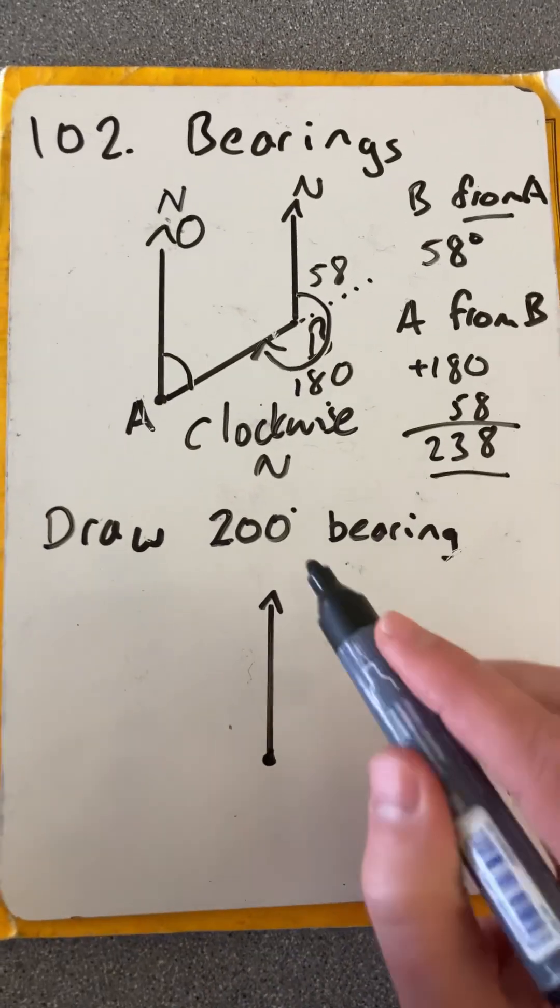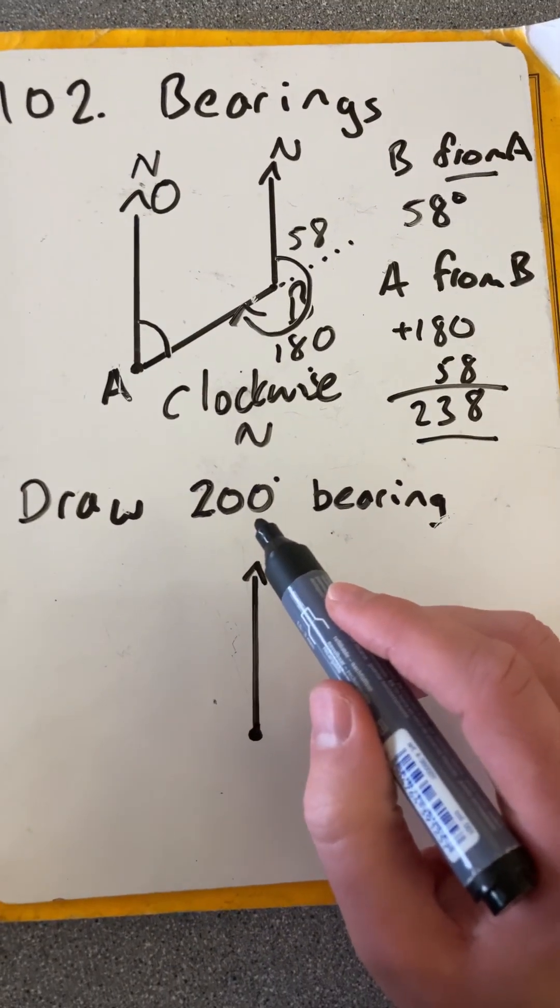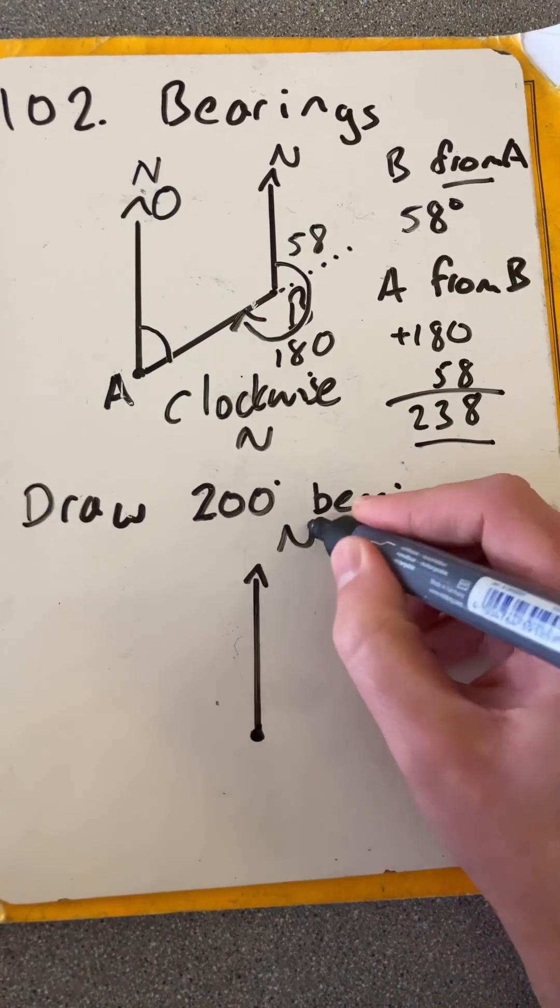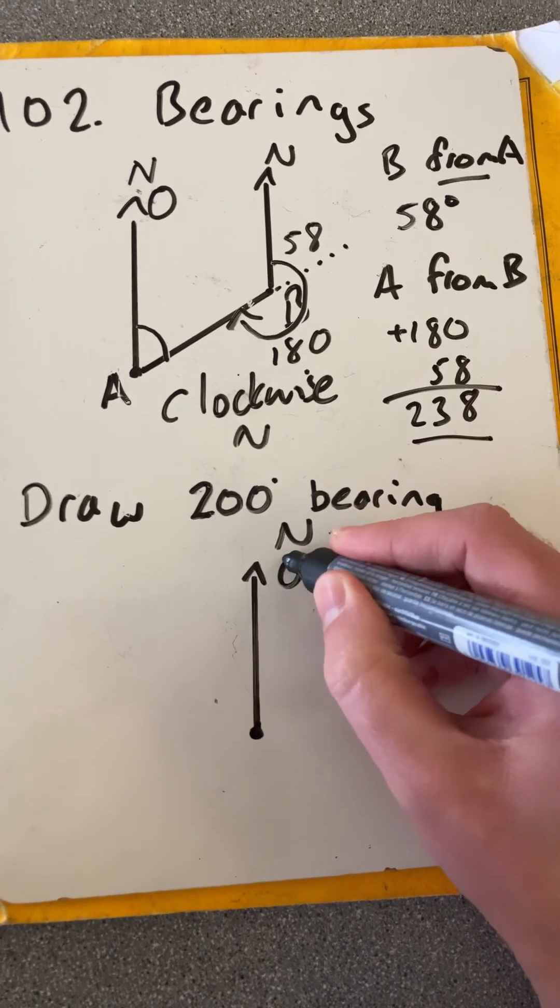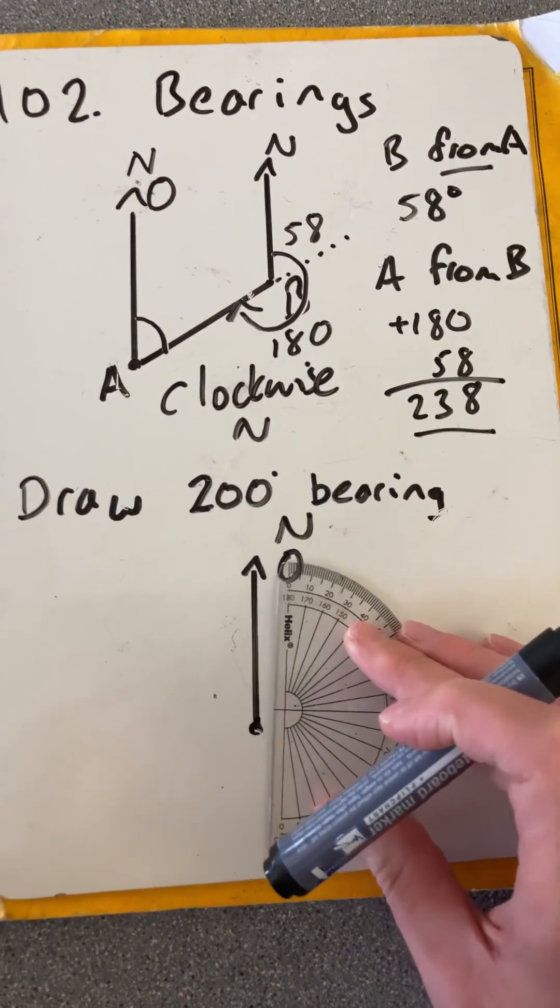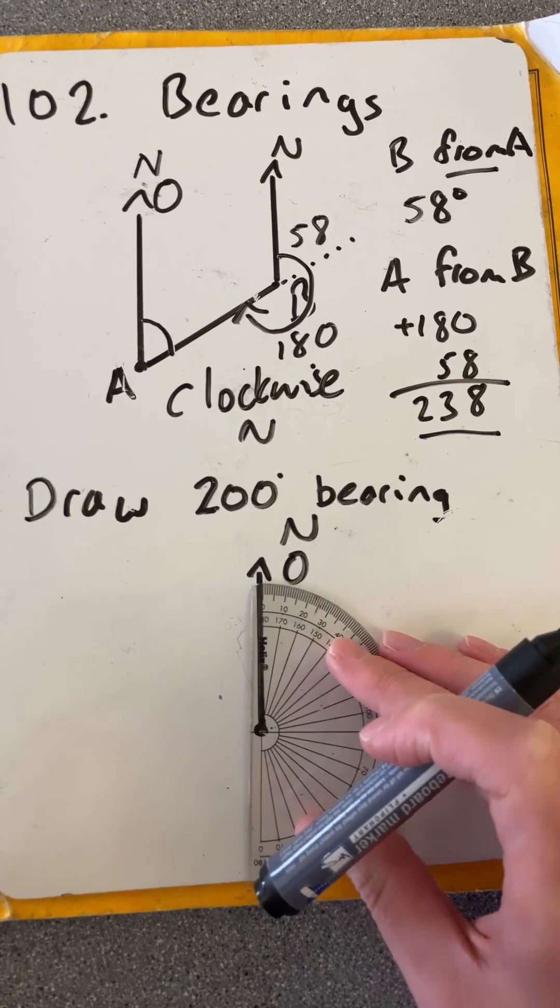Okay, now if you have to draw a bearing, this time I'm going to draw something that's bigger than 180. Again, reading from north, from zero.